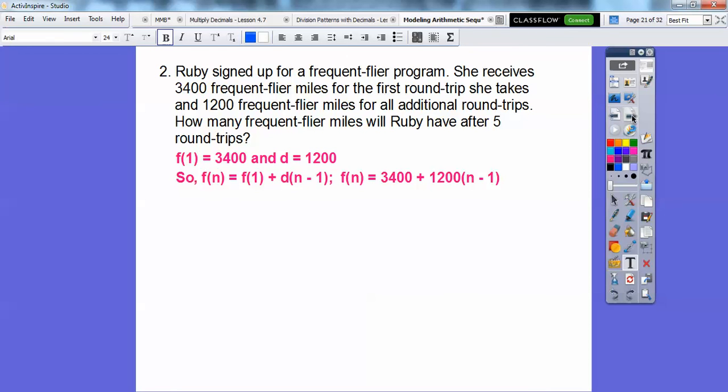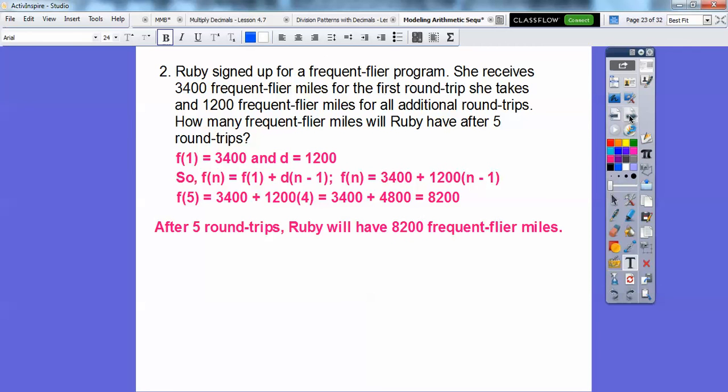So there's our groovy formula, and then we just plug in. Here's our first term, here's our D right here. And then we're going to look for F of 5. So F of 5, this is going to be 5 minus 1 or 4 right there. So F of 5 is going to be 3,400 plus 1,200 times 4. 12 times 4 is 48, so add these two zeros. It's 48 with two zeros, so when we add 48 and 34, we get 82, so 8,200.